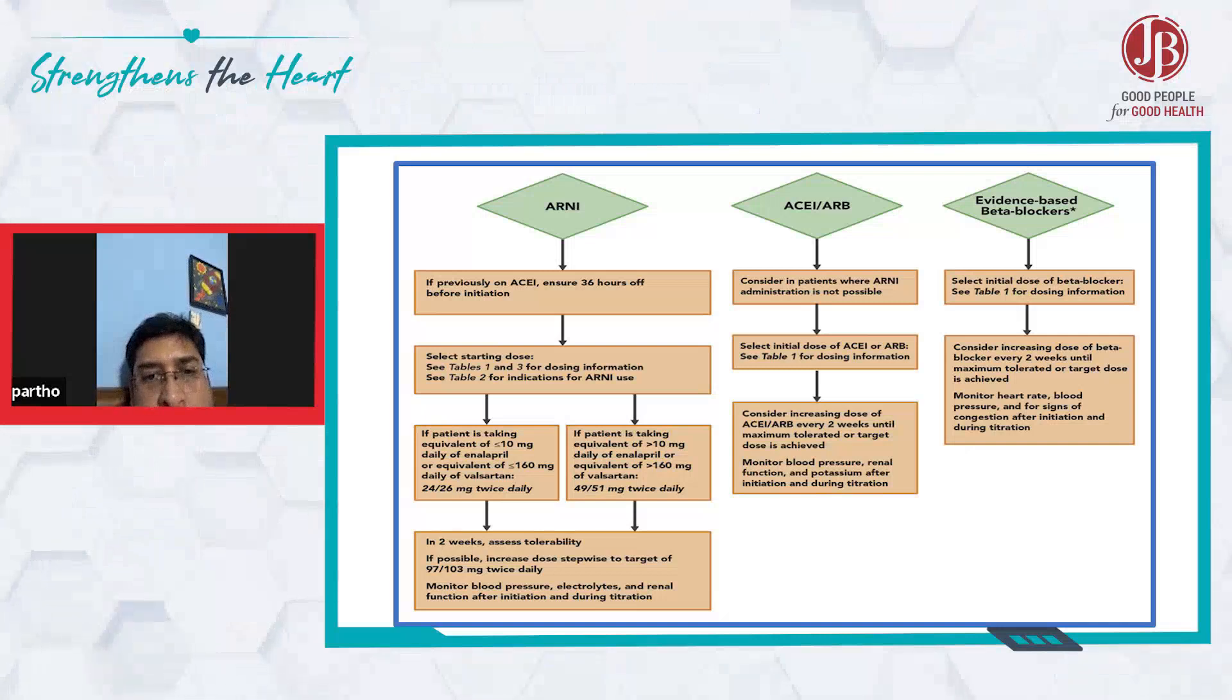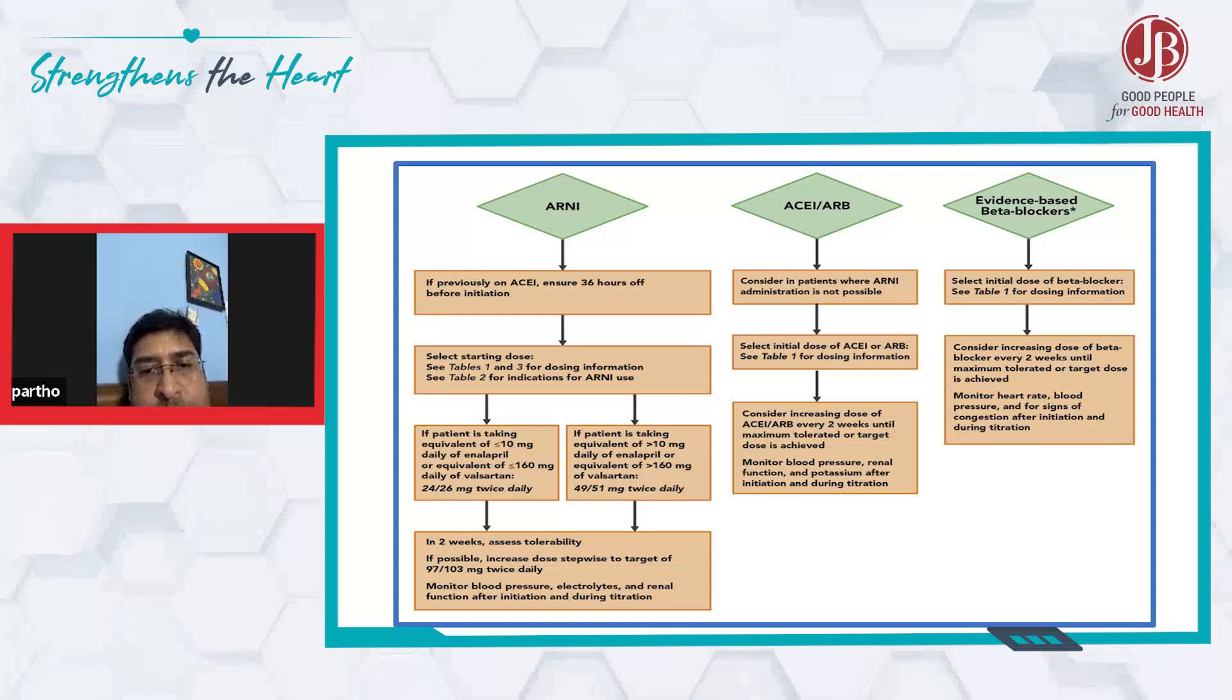In two weeks, we should assess tolerability and if possible increase the dose stepwise to the target of 100 mg BD. The main target should be 100 BD. Meanwhile, we should measure blood pressure, electrolytes, and renal function after initiation and during titration.